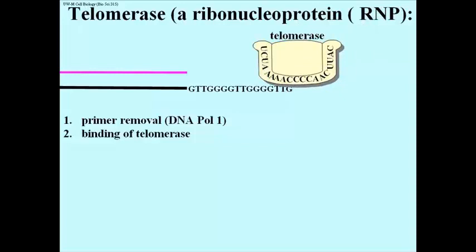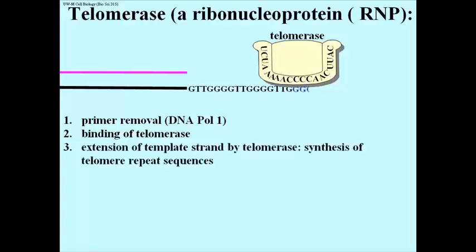Then the telomerase ribonucleoprotein binds. The bases in the RNA of telomerase are complementary to bases at the 3' end of the lower strand, resulting in H-bond formation, after which telomerase can extend the lower template strand, synthesizing a telomere repeat sequence.